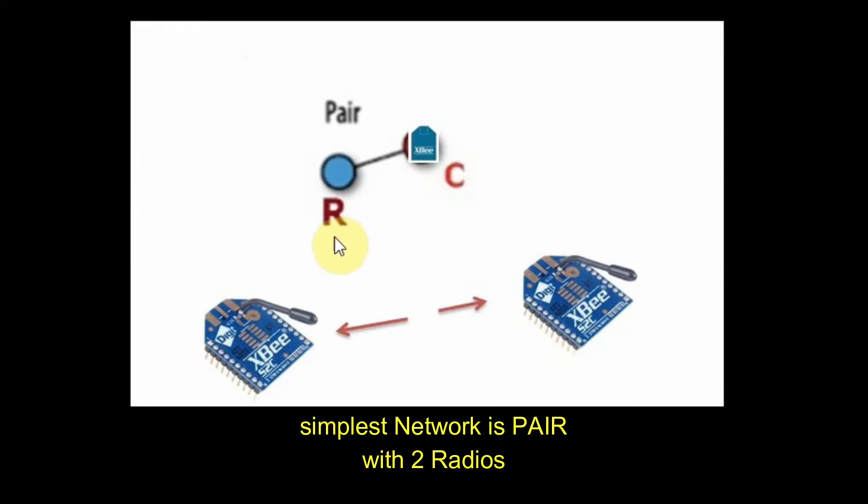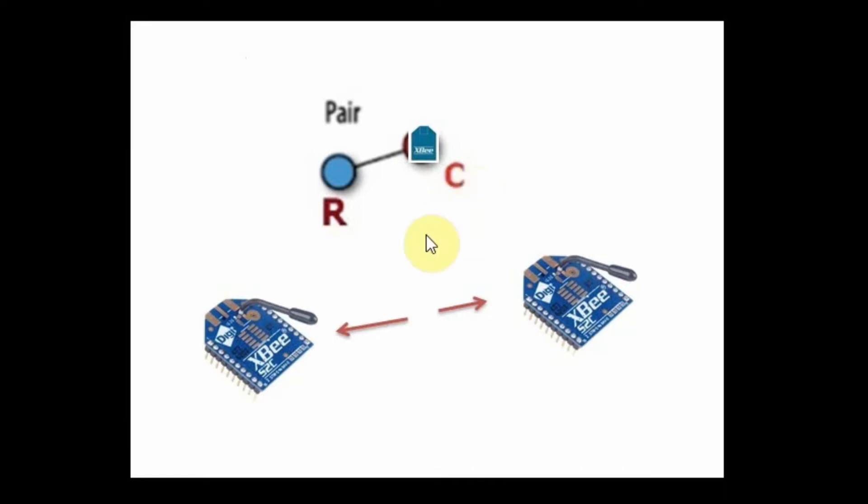Next we'll see the topologies. First type of network topology is PAIR which is the simplest network with just two radios or nodes. One node must be a coordinator and the other one can be an end device or router.